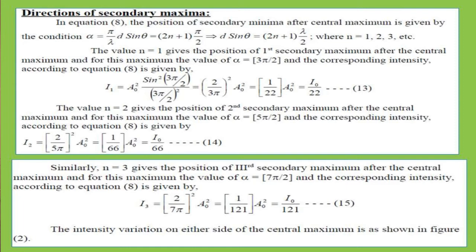We see a distribution of intensities in Fraunhofer diffraction by a single slit: a central maximum at point O, then a first minimum where the phase changes by π, then the first secondary maximum at 3π/2, then at 2π a minimum again, then at 5π/2 a secondary maximum, on both sides of the central point O — giving the diffraction pattern as shown in the first slide.